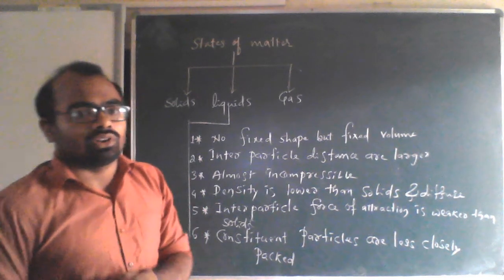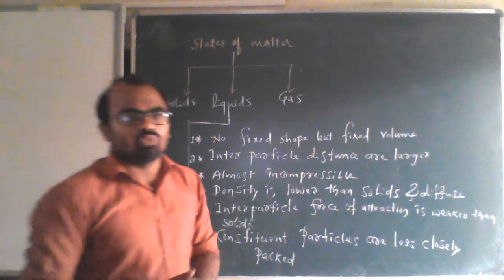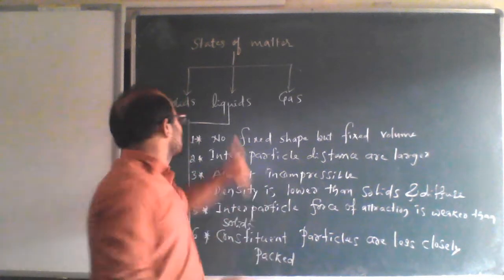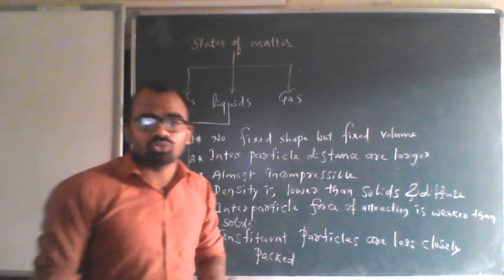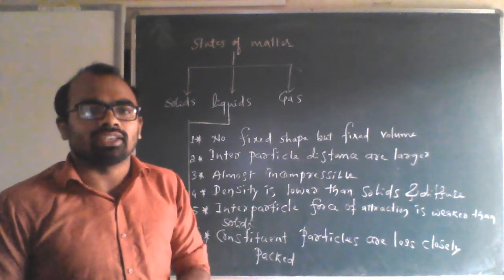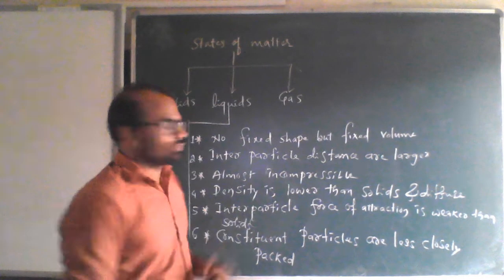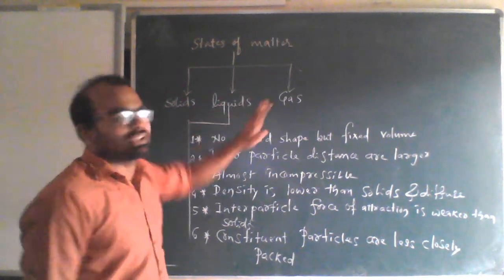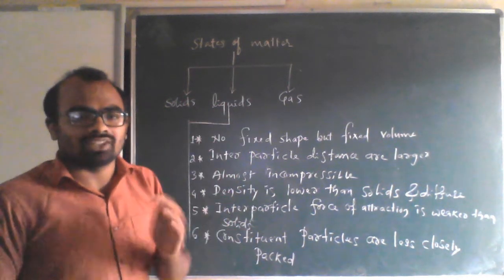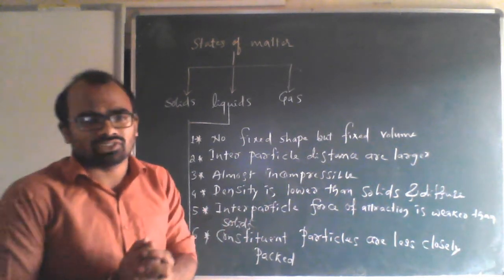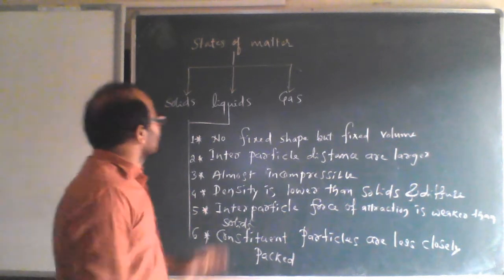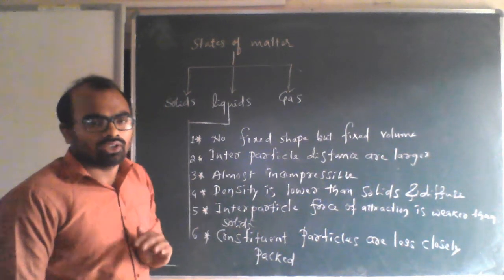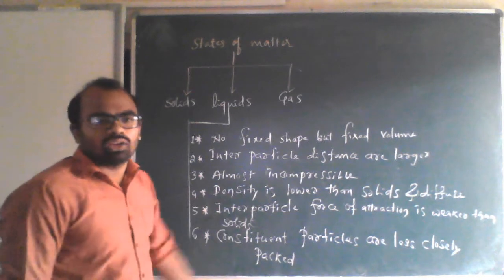We have already understood what is matter and the properties of particles of matter. In the last class we studied properties of solids. So in this class we will study the properties of liquids. States of matter has three main forms: solid, liquid and gas. There are two other forms — plasma and BEC — but those are not in your syllabus.